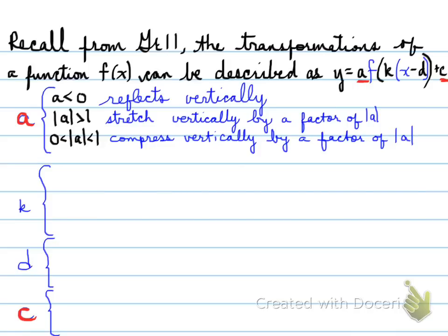If the absolute of a is between 0 and 1, so the number not the sign is less than 1, we're looking at a compression vertically by a factor of |a|.